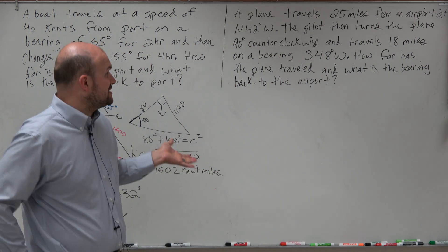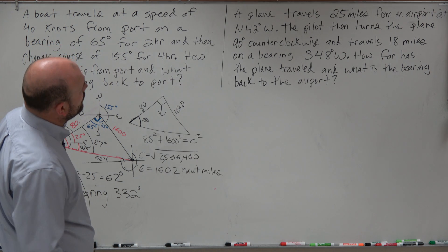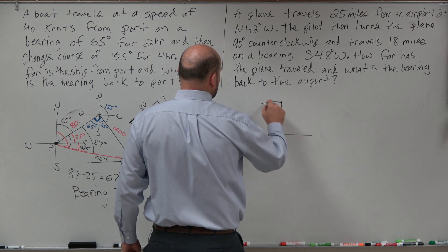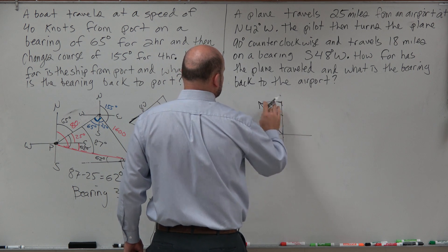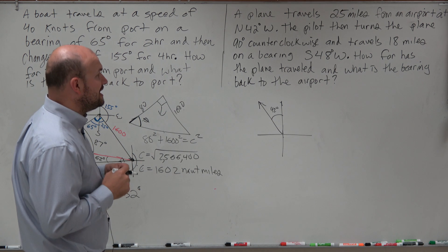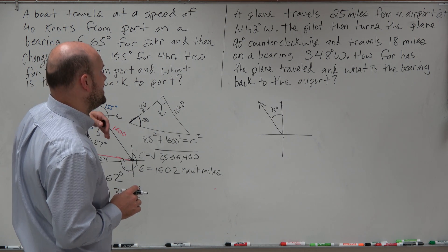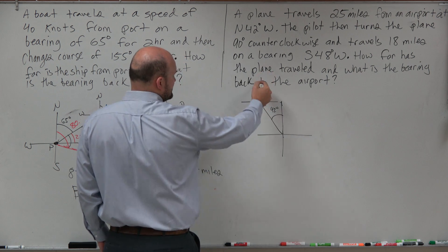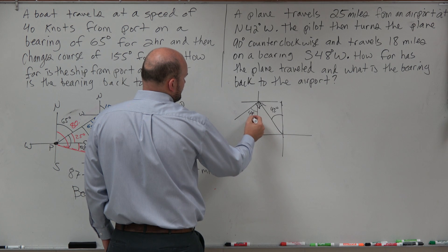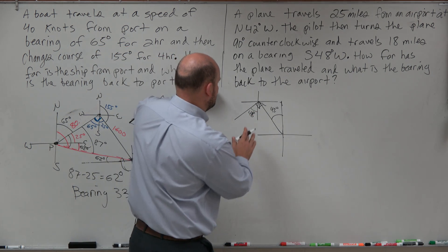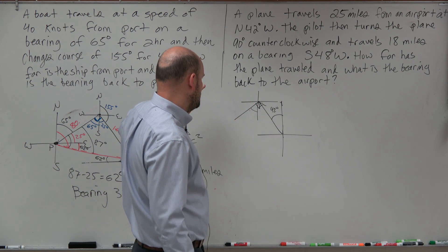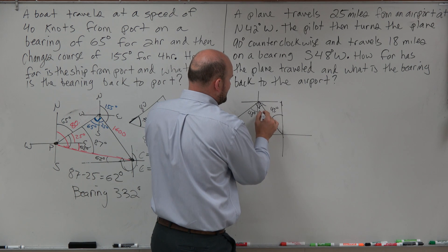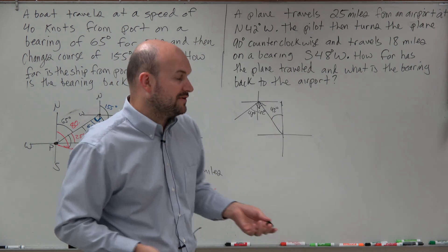Now let's get to the second problem, which uses bearings in a different format. A plane travels 25 miles from an airport at north 42 degrees west. So from due north, we go 42 degrees toward the west — that angle is 42 degrees. Then the pilot turns the plane 90 degrees counterclockwise and travels 18 miles on a bearing of south 48 degrees west. By alternate interior angles, if that first angle is 42 degrees, then the corresponding angle is also 42 degrees, and together they make a 90-degree angle.